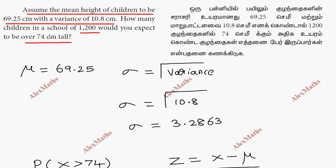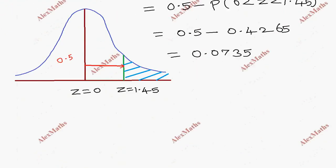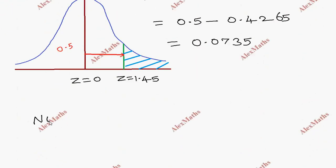How many children? Total is 1200. Number of children over 74 cm = 0.0735 × 1200 = 88.2.